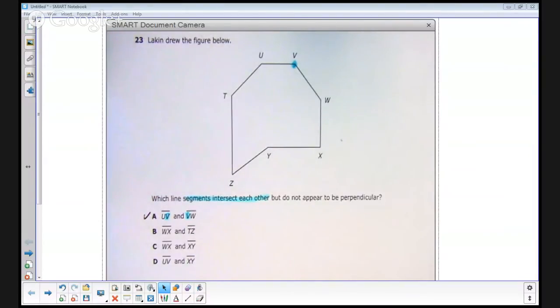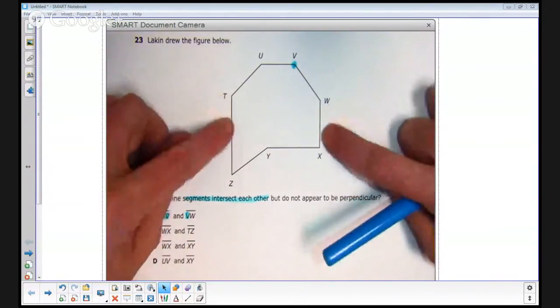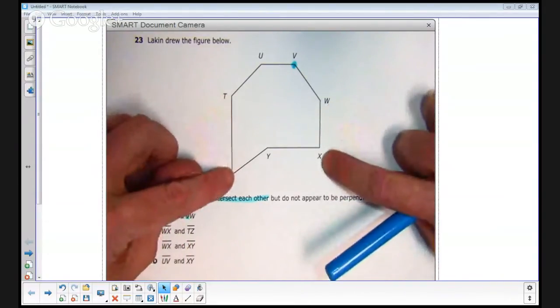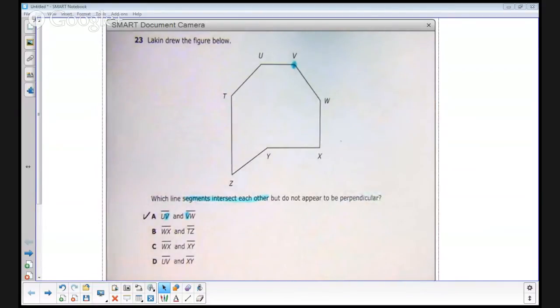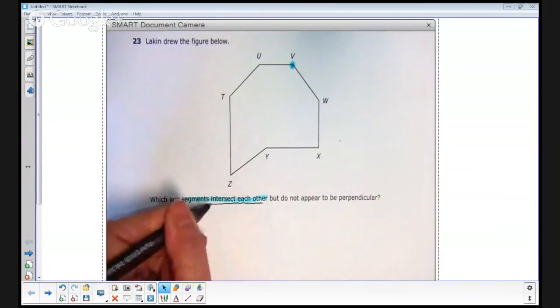Let's take a look at answer B. It says line segment WX and TZ. You will notice WX and TZ have no points in common, no letters in common in the name, so no points in common. And if you look at the diagram, they have no points in common here either. That means that answer choice B is incorrect because those two lines do not intersect each other. We want our lines to intersect each other.